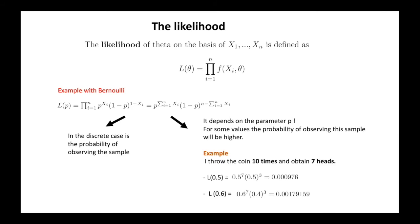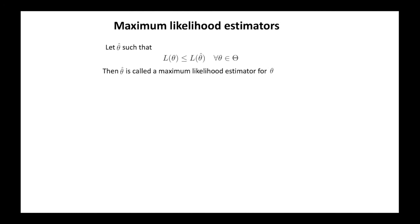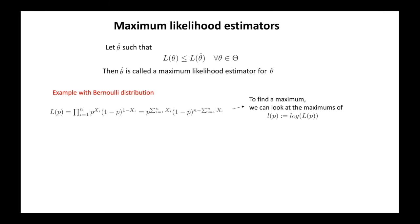Notice that for the same sample, we will get different values of the likelihood if we consider different values of p, as you can see on the slide. So there are values of p that make it more probable to observe this sample relative to others. This interpretation of the likelihood in the discrete case justifies the following definition: if there exists a value of our parameter such that its likelihood is greater or equal than the likelihood of all other possible values of the parameter, we take that value as the point estimator of the parameter, and it is called a maximum likelihood estimator for theta. Note that it is a function from the sample to the parameter space.